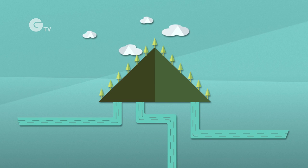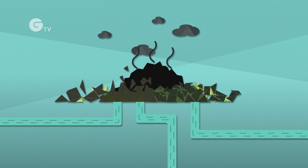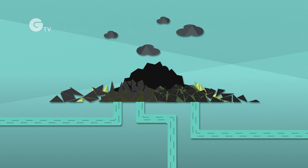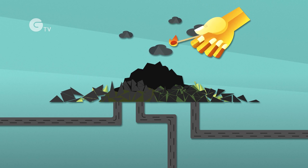In mountaintop removal mining, coal companies clear-cut forests and literally blow the tops off mountains to get the coal. This process dumps millions of tons of waste into our streams and poisons our drinking water. But mining coal is only the beginning.